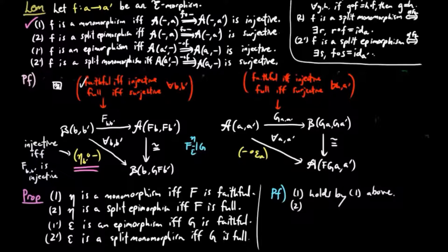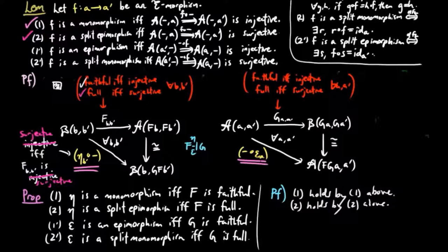For (2): F is full if and only if for each B, B', F_{BB'} is surjective. If and only if for each component B' of eta, and for each component B of the post-composition by eta_{B'} natural transformation, the diagonal morphism is surjective. And by (2) of the lemma above, this is equivalent to eta_{B'} being a split epimorphism for each component B', which means eta is a split epimorphism. Parts (1') and (2') are similar and use the results (1') and (2') from the lemma above. This completes the proof.